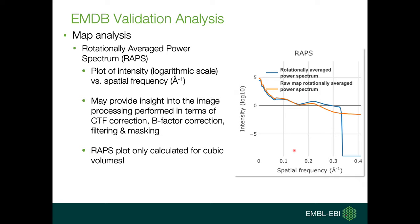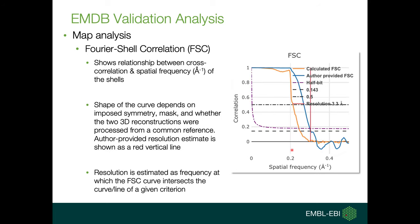The third metric is the rotationally averaged power spectrum, or RAPS for short. It gives intensity on a logarithm scale versus spatial frequency. This plot may provide insight into the image processing performed, in terms of CTF correction, B-factor correction, filtering, and masking. The RAPS plot is currently only calculated for cubic volumes. The last one is the FSC plot, which shows the relationship between the cross-correlation and the spatial frequency of the shells. It is the most commonly used method to determine the resolution of EM maps.